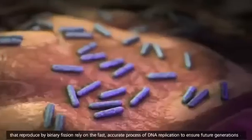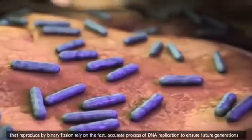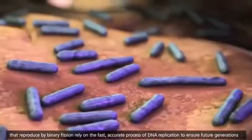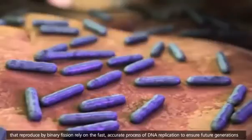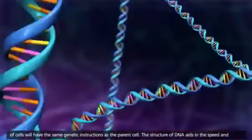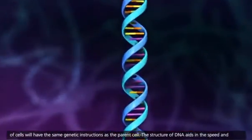Prokaryotic cells that reproduce by binary fission rely on the fast, accurate process of DNA replication to ensure future generations of cells will have the same genetic instructions as the parent cell.